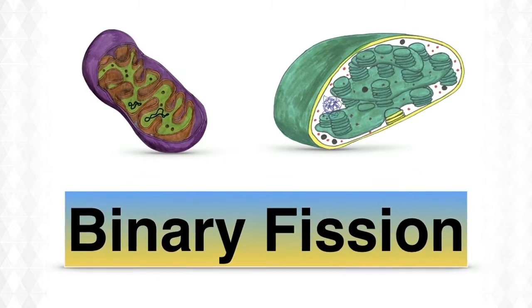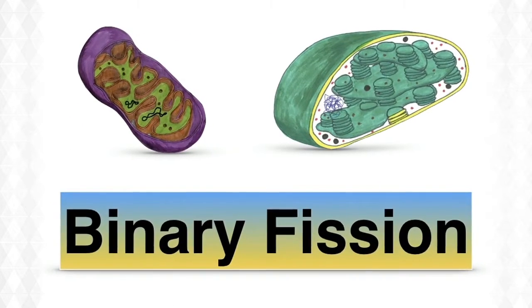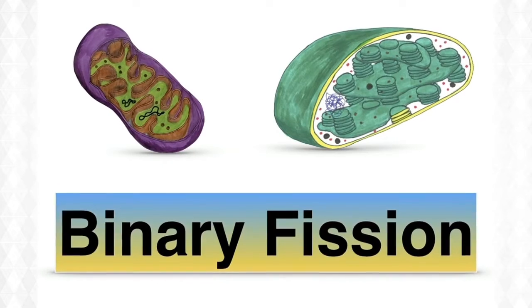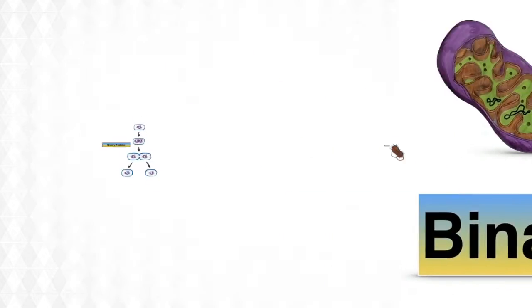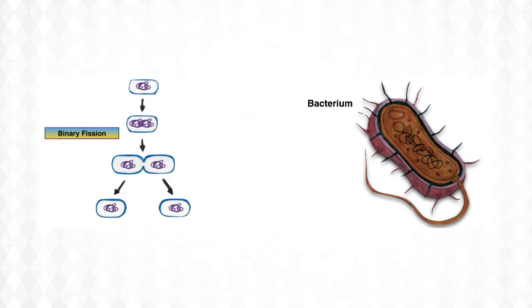Mitochondria and chloroplasts reproduce by means of binary fission, the same way that bacteria reproduce.